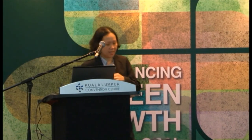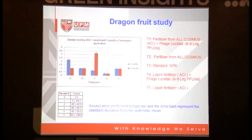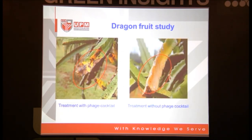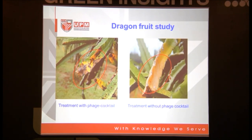Another research we carried out is on dragon fruit in Sungai Baging in Pahang. We can see some differences - the Xanthomonas attacks the trunk part. The treatment without phage shows all rotted, watery tissue. After we spray - because applying through fertilizer alone takes time to work, we applied both the fertilizer incorporating the phage and also spraying. With the phage treatment, the tissue becomes dry rather than watery like without the phage.